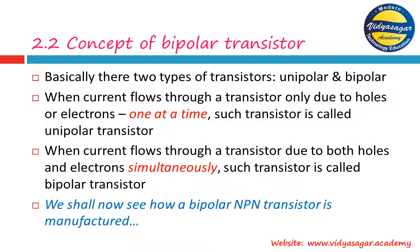The question is: why is a bipolar transistor called bipolar, and why are there two different types — bipolar transistor and unipolar transistor? We must see the meaning of bipolar and unipolar. When current flows through a transistor only due to holes or electrons — only one type at a time — such a transistor is called a unipolar transistor.